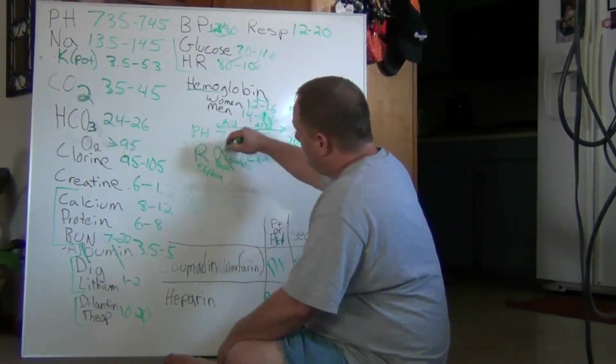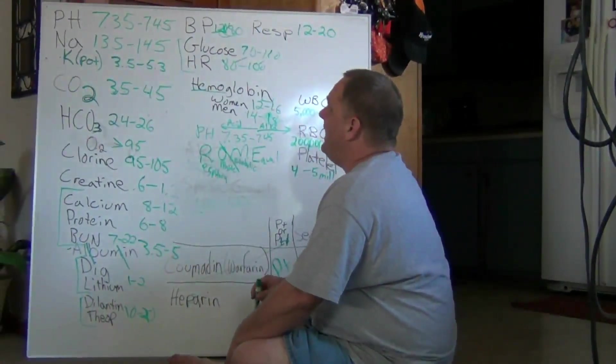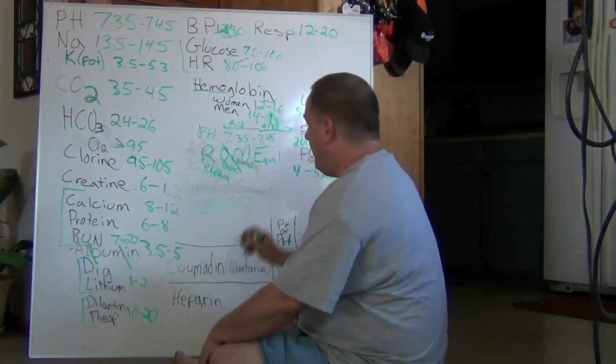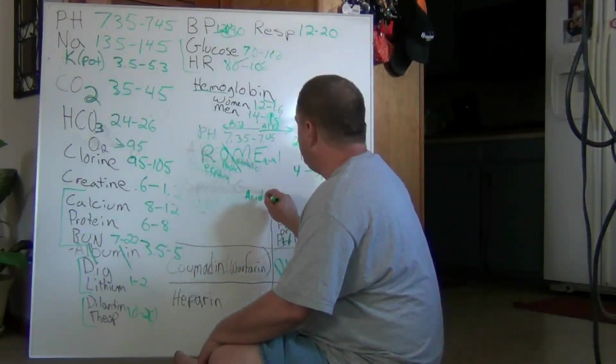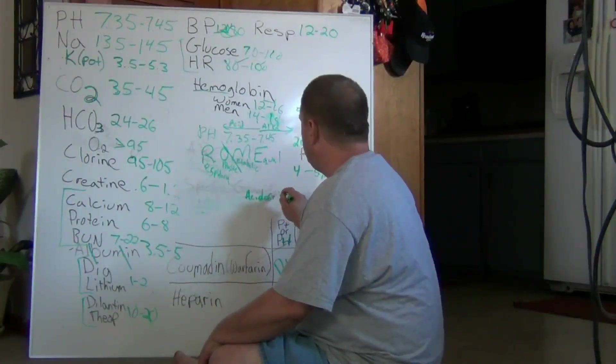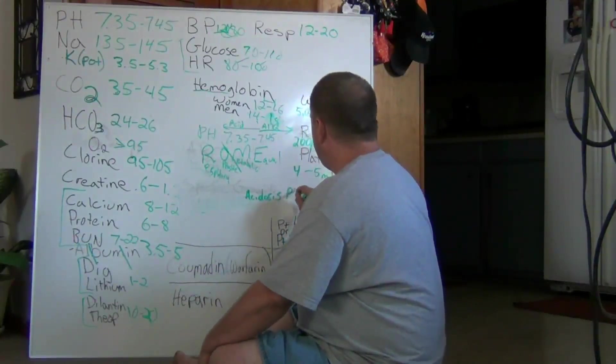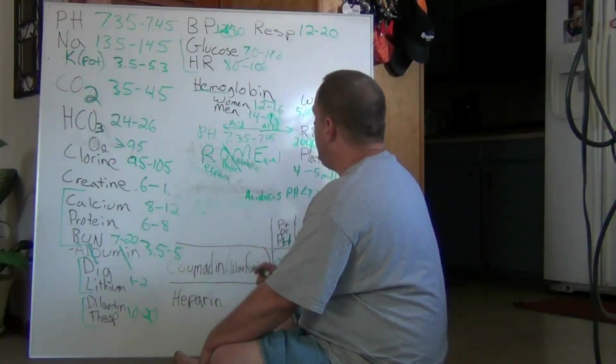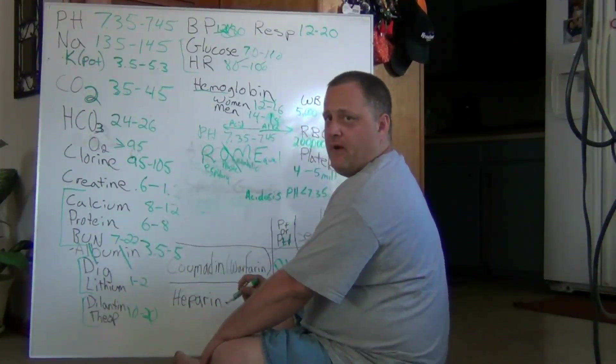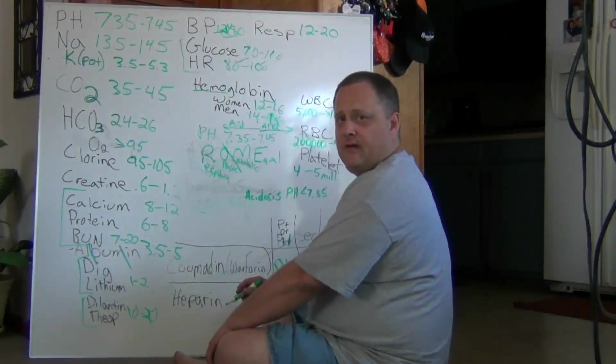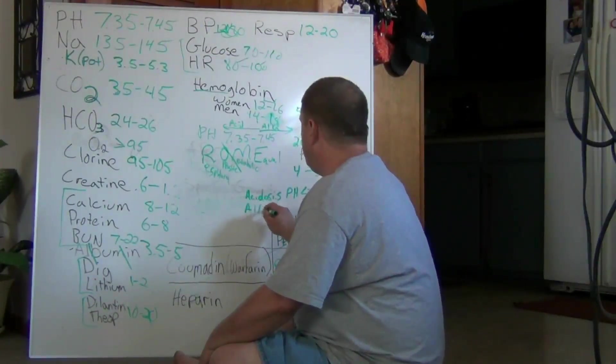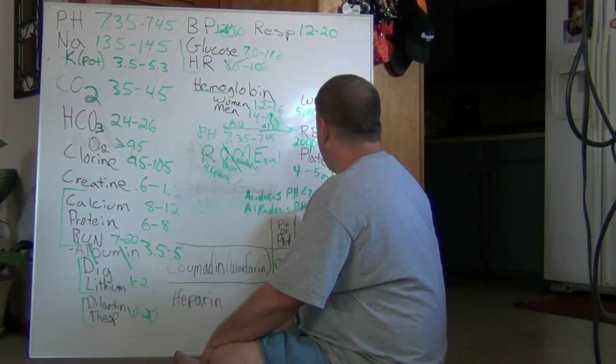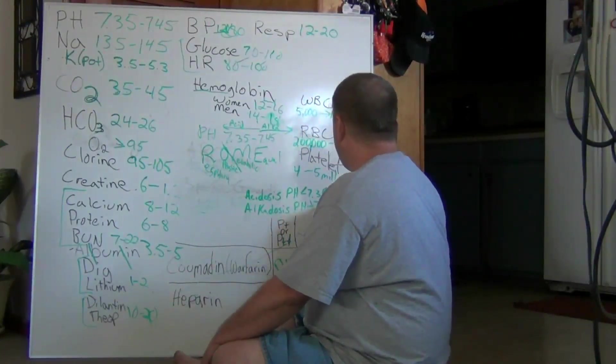So, if we have a pH value less than 7.35, we will have some type of acidosis. The pH is less than 7.35. If we have a pH that's greater than 7.45, we're going to have an alkydosis value.